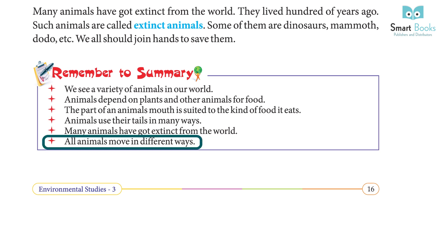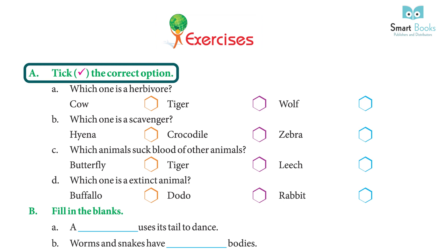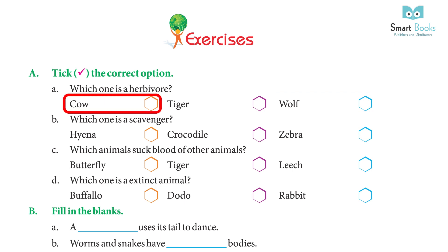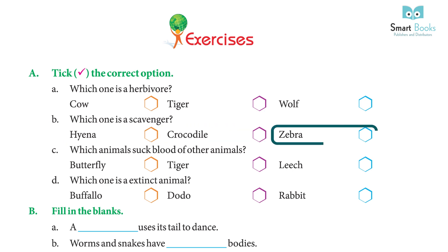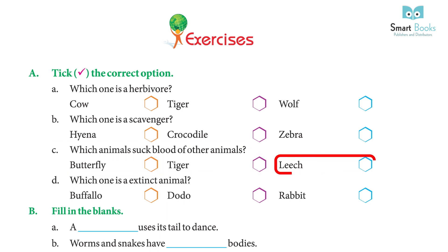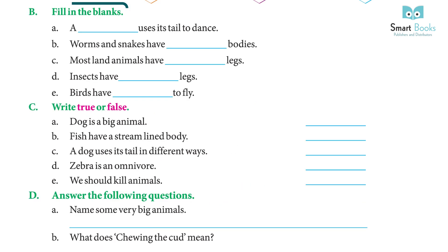Exercises: choose the correct option. A) Which one is a herbivore — cow, tiger, wolf? Answer: cow. B) Which one is a scavenger — hyena, crocodile, zebra? Answer: hyena. C) Which animal sucks blood of other animals — butterfly, tiger, leech? Answer: leech. D) Which one is an extinct animal — buffalo, dodo, rabbit? Answer: dodo.